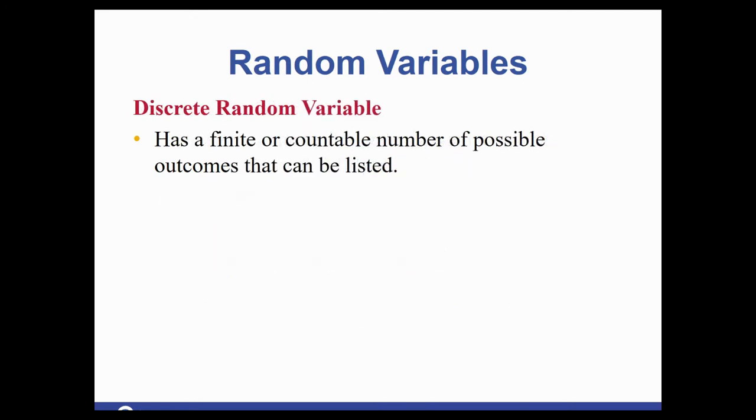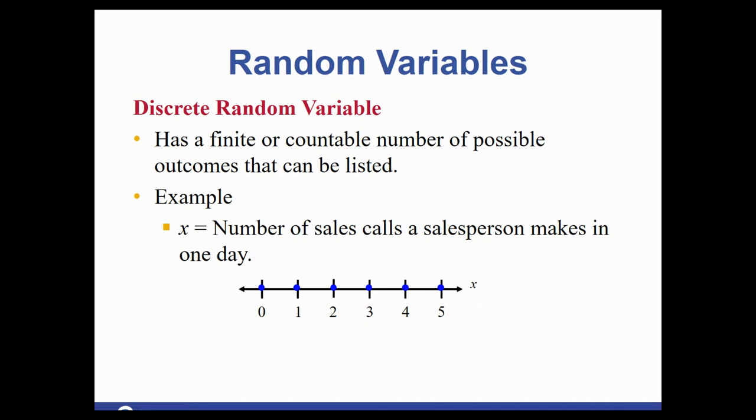The first one would be discrete. So a discrete random variable has a finite or countable number of possible outcomes. You should be able to list the outcomes. So for the number of sales calls, you could count them. One call, two calls, three calls. Or perhaps you're counting the pairs of shoes in your closet. One pair, two pair, three pair. That would be discrete.